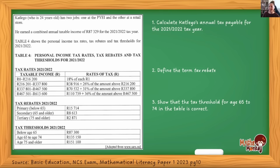It says: Katejo, who is 24 years old, has two jobs — one at the PYEI and the other at a retail store. He earned a combined annual taxable income of R87,329 for the 2021/2022 tax year.